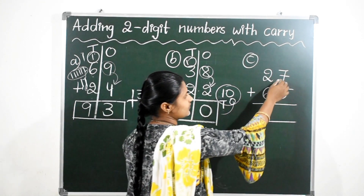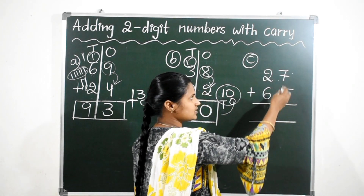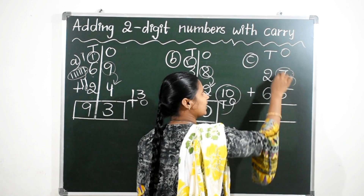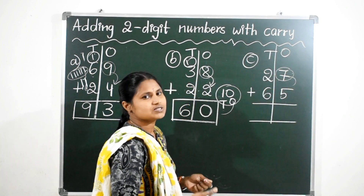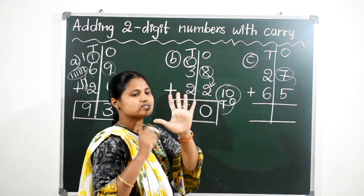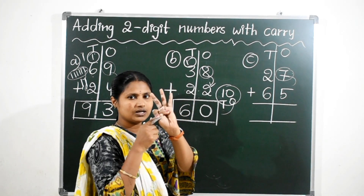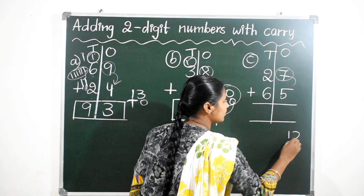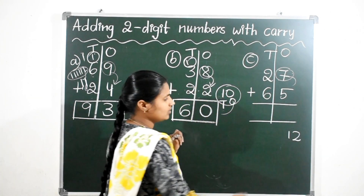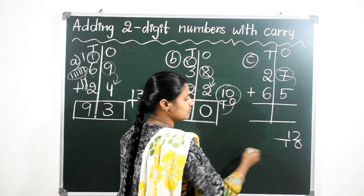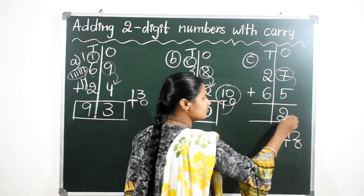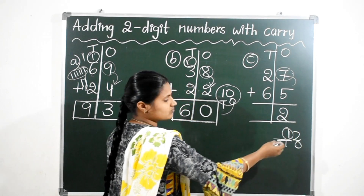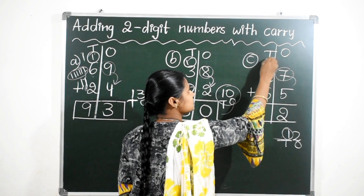Next: 7 plus 5. 7 after 5 numbers — here 7 is the big number. Keep 7 in mind and count 5 more numbers: 8, 9, 10, 11, 12. Here we got a 2-digit number — 12. So the 1s place value is 2, write it in the 1s place. The 10s place value is 1 — this 1 ten, write it in the 10s place as carry over.